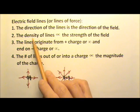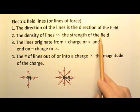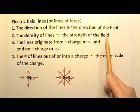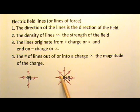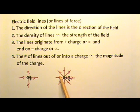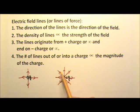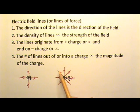The density of the lines is proportional to the strength of the field. At a location closer to the charge, the lines are closer together — higher density — therefore a stronger electric field. Farther away, the lines are not as close together — lower density — meaning a weaker electric field.